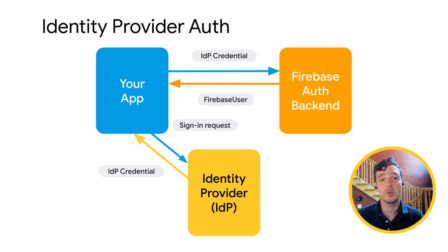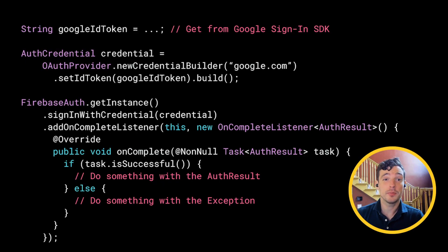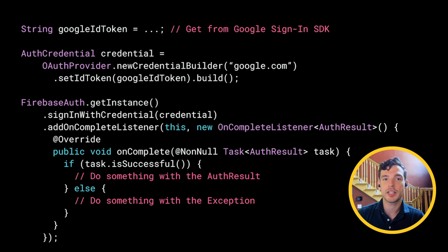Signing into Firebase happens in two steps. One, you get or generate some form of user credential. Two, you exchange that credential for a Firebase token. For email password, step one is just asking your user for their email and password. But for identity providers, that step is just a little bit more complicated. Is this where you would use something like the Google sign-in SDK? Yeah. I had to use that a long time ago so I could programmatically upload cat photos to Google Drive. You can use an SDK to get tokens for identity providers like Google, Facebook, or Apple that have pre-built SDKs for each platform. Then you can use the OAuth provider class in the Firebase SDK to package the credentials and call sign-in with credential.